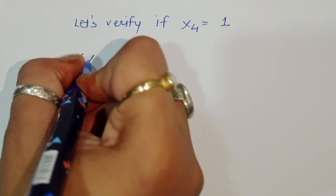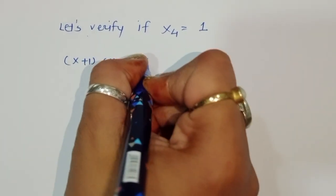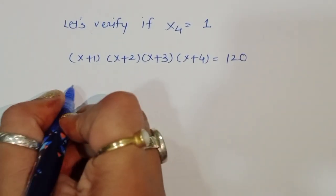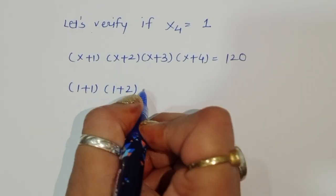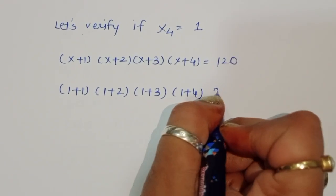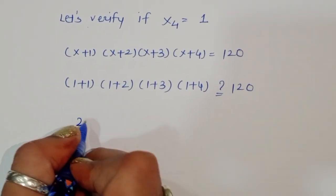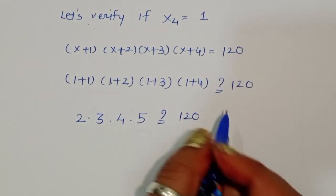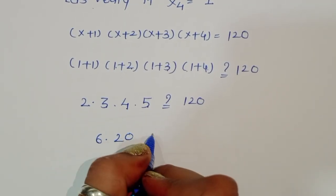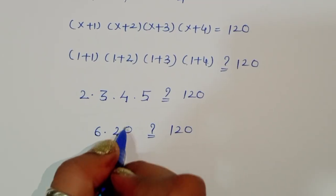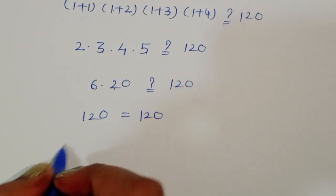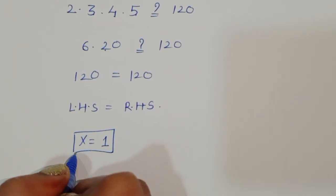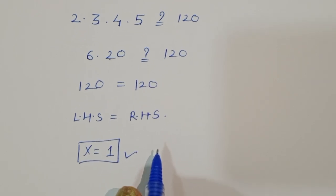Let's verify x = 1: (1+1)(1+2)(1+3)(1+4) = 2 × 3 × 4 × 5 = 120. LHS equals RHS, so x = 1 is correct. x₃ = -6 is also a valid real solution, while x₁ and x₂ are imaginary solutions.